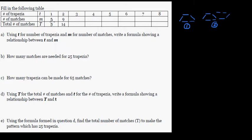The sequence is going up by four each time: five plus four is nine, nine plus four is thirteen, thirteen plus four is seventeen, seventeen plus four is twenty-one, twenty-one plus four is twenty-five, then twenty-nine, and thirty-three. That is the match count for each pattern.